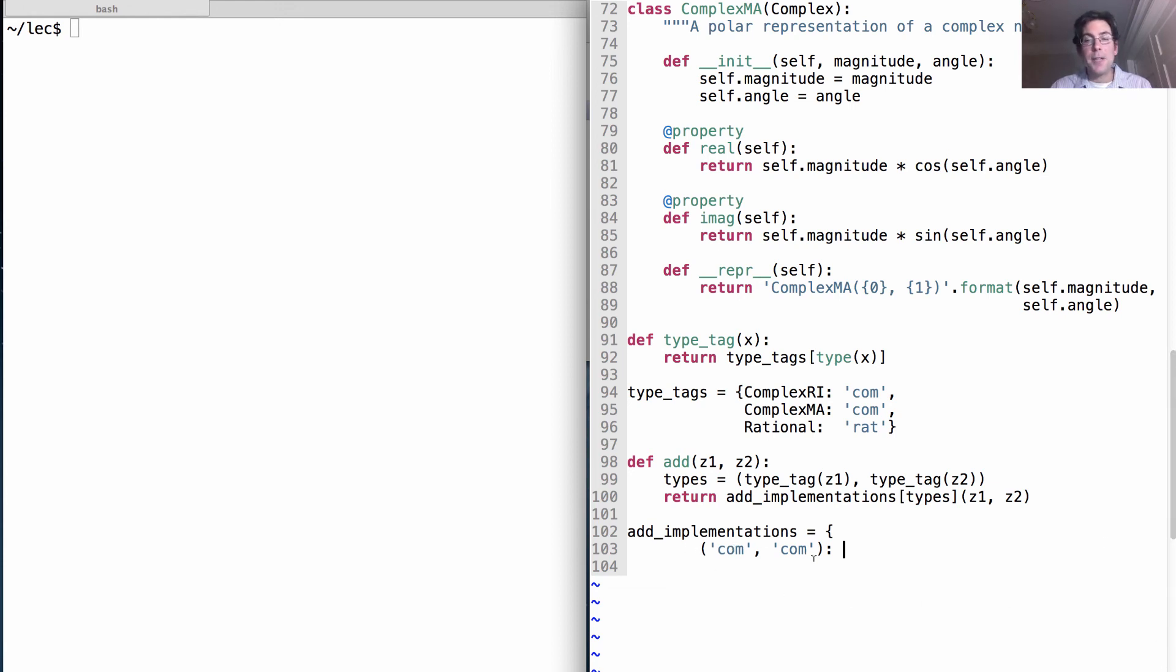And the value is going to be functions of two arguments that actually perform addition. So how do we add two complex numbers together? We call add_complex.